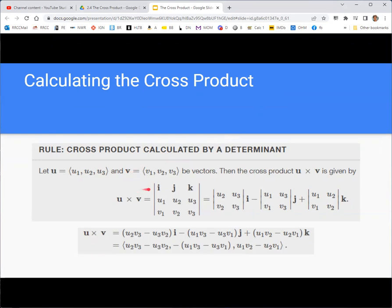We create a three-by-three matrix. The first row is the basis vectors, i, j, k. These are the unit vectors in the direction of the x, y, and z axes. The second row is the first vector mentioned, u, its components. And then the third row is the second vector mentioned, its components.